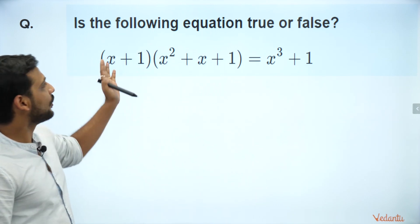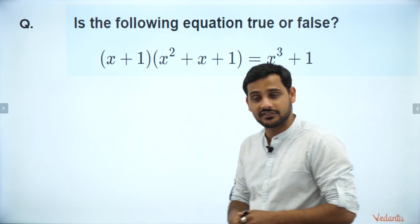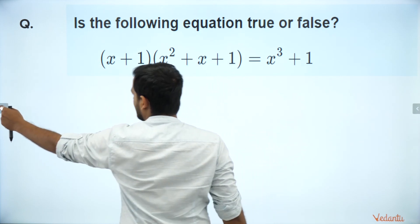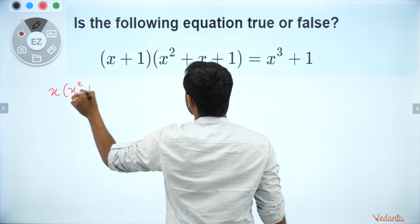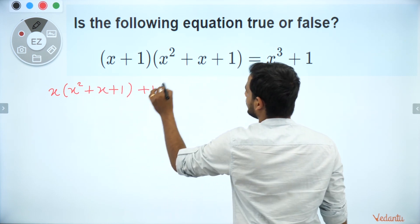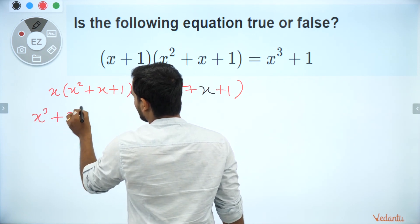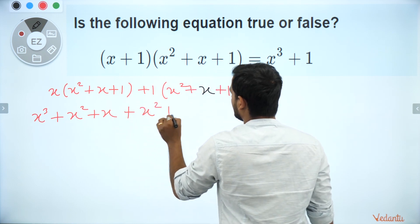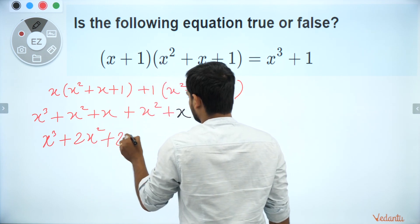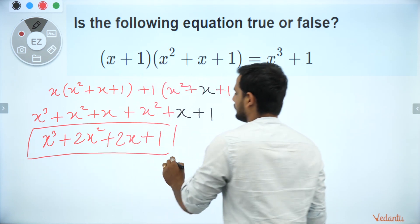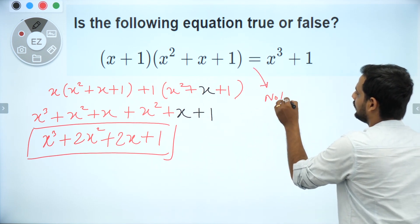The first question: is the following equation true or false — (x+1)(x²+x+1) = x³+1? Let's multiply x+1 with x²+x+1. You get x·(x²+x+1) + 1·(x²+x+1) = x³+x²+x + x²+x+1 = x³+2x²+2x+1. This is not equal to x³+1, so the equation is not true.